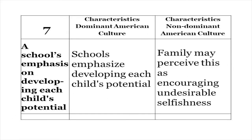Here we see how schools emphasize the development of each child's potential — another big difference between the free school or Sudbury philosophy and the values of the non-dominant culture. Schools in the dominant culture emphasize each child's individual development. But in the non-dominant culture, families perceive this as encouraging undesirable, selfish traits. When we allow the child to choose what they want to do, when, how, and where, the non-dominant culture sees this as developing undesirable selfishness in students, so they may be reluctant to participate in democratic schools.